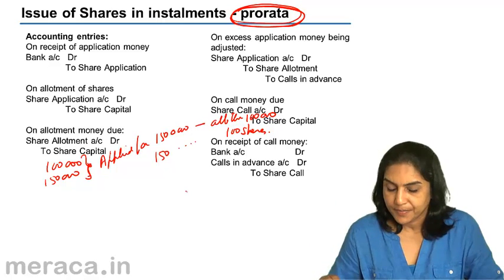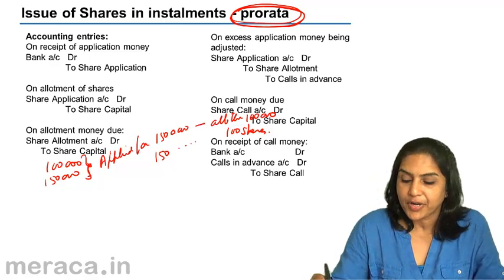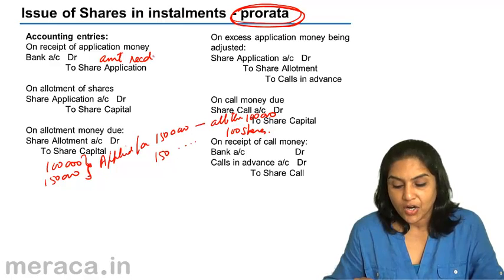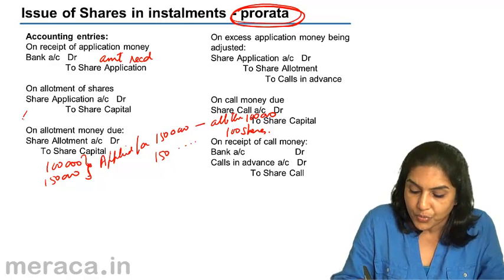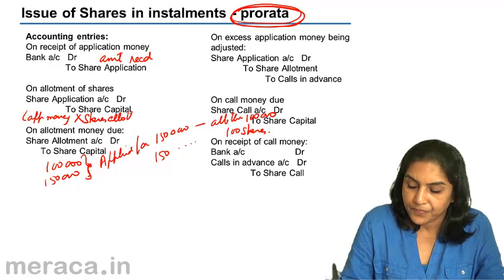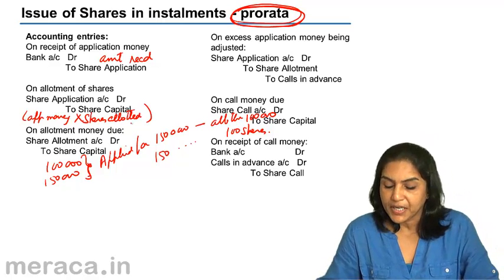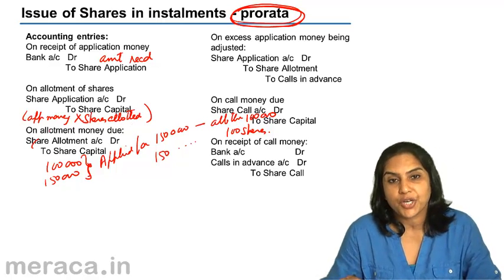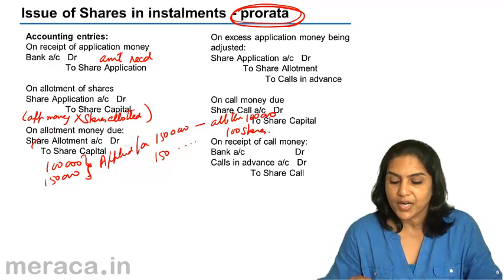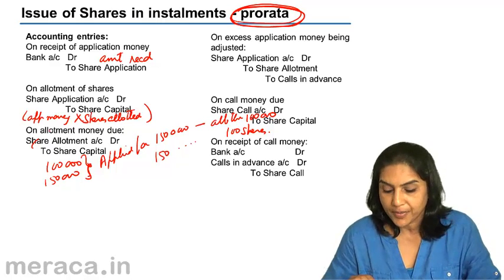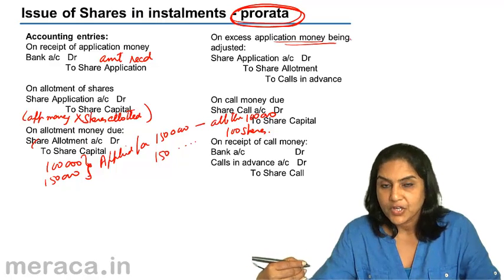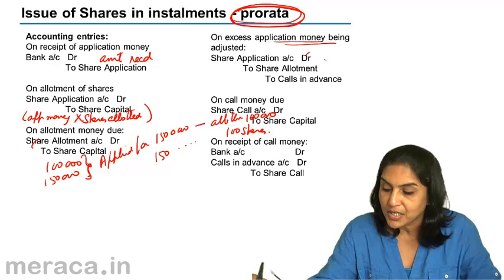What would be the entries? On receipt of application money: bank account debit to share application with the amount received. When shares are allotted: share application account debit to share capital — with application money per share into shares allotted. For allotment money due: share allotment account debit to share capital with allotment money per share into number of shares allotted. Extra application money adjusted goes to share allotment: share application account debit to share allotment.